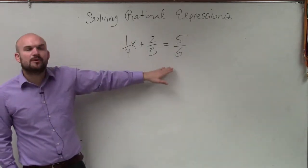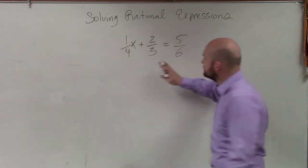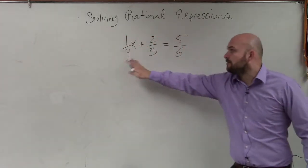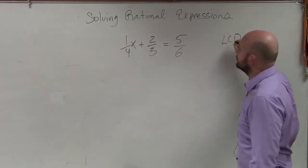So to do that, what we did is we multiplied by our LCD. When you look up here, you can see I have three different denominators: four, three, and six. And the LCD is going to be what we call the least common denominator, the smallest number that all of our denominators evenly divide into.